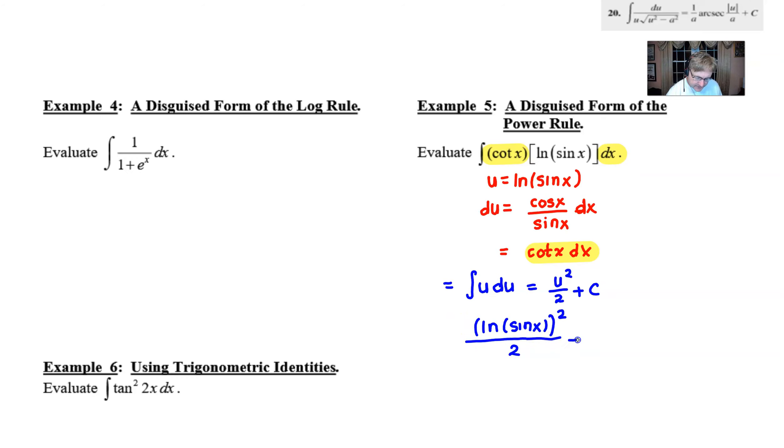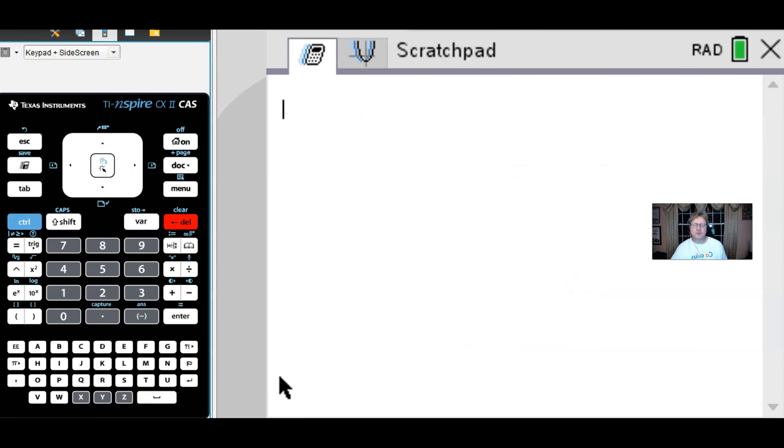What do you say we take a look at this answer using a CAS calculator to check? So here we are back with our TI-nspire. You could also use other types of CAS—computer algebra system—calculators that are available online if you don't have access to an nspire.